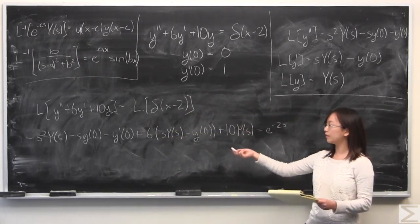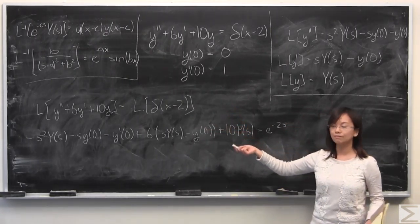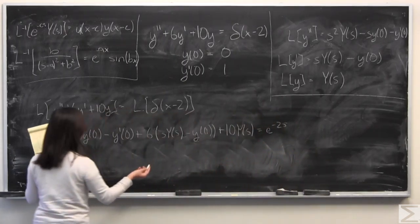From here, since this is an initial value problem, I've given you these y zeros and the y prime of zeros that you would ever hope to need, and they're up there. It's an initial value problem, so let's go ahead and plug those in.